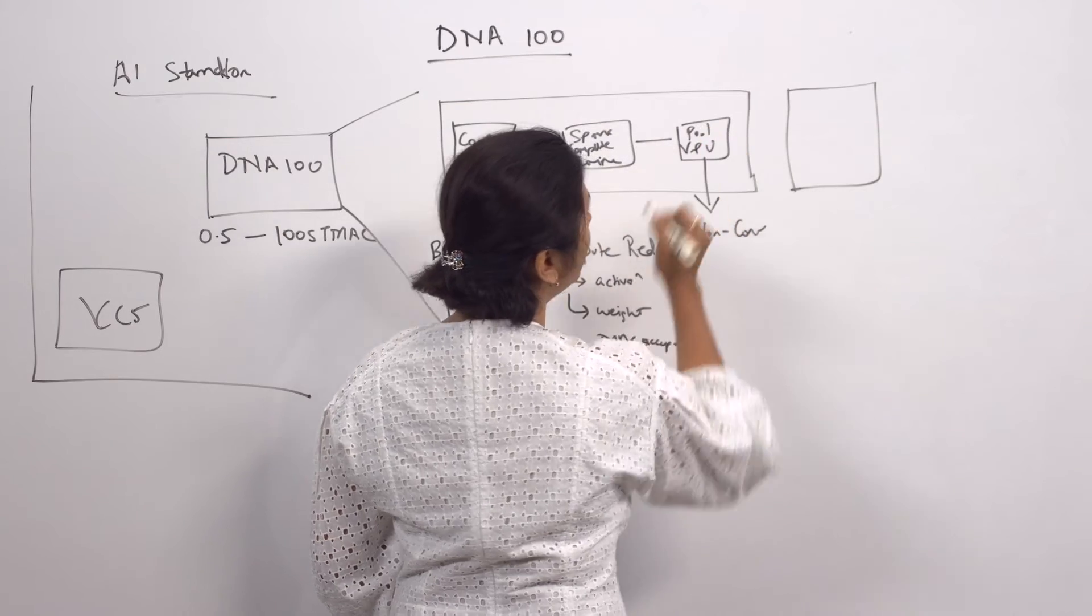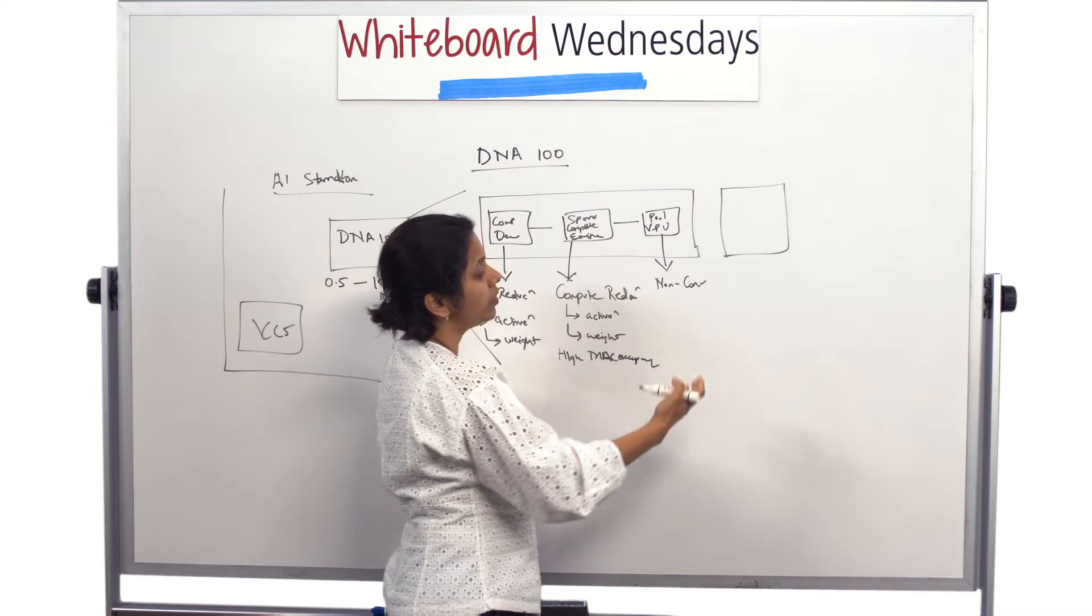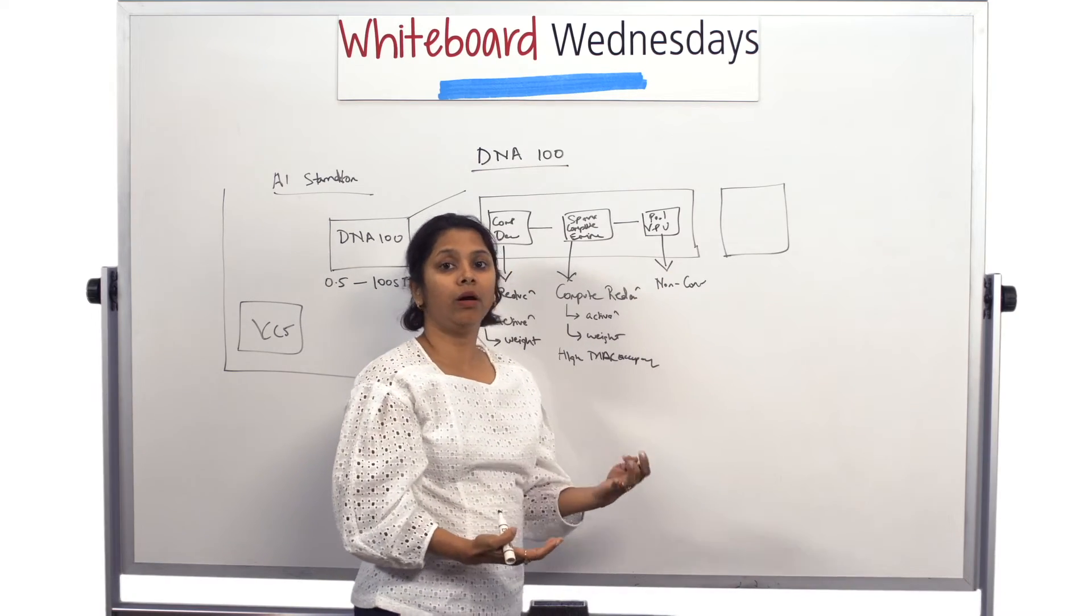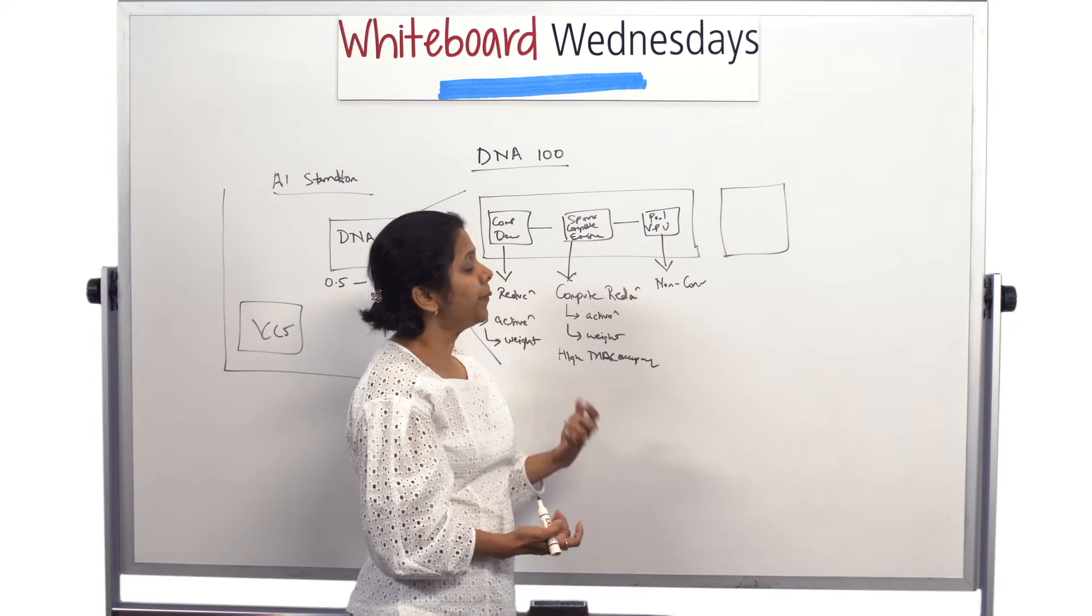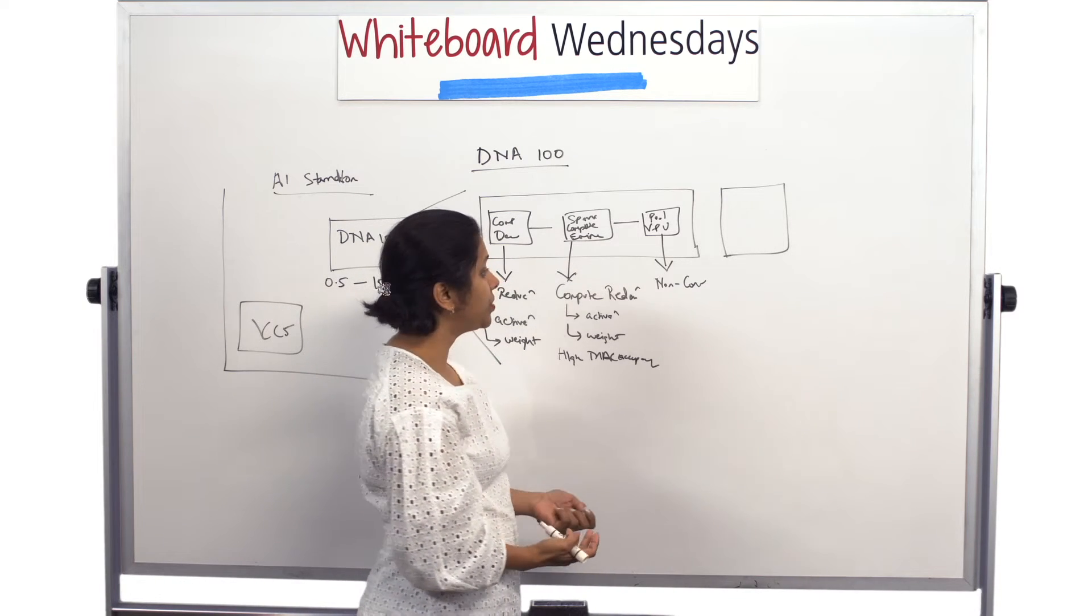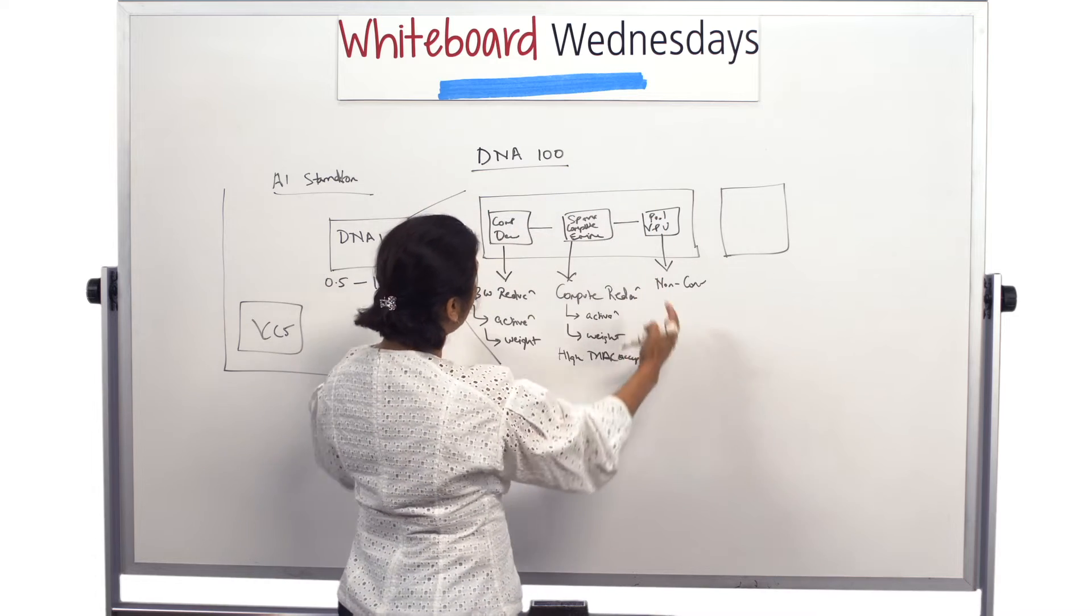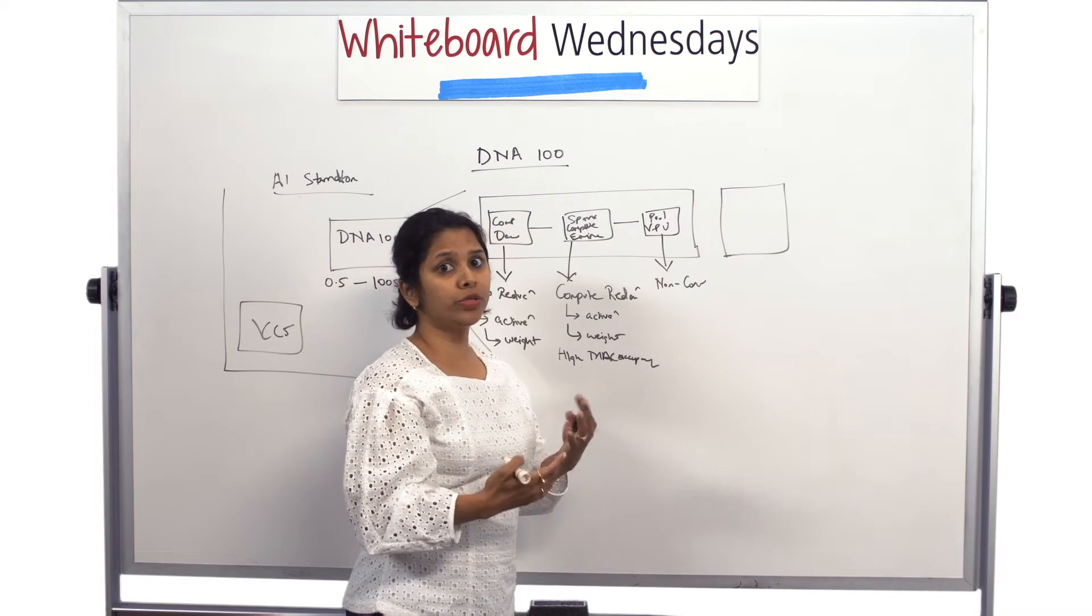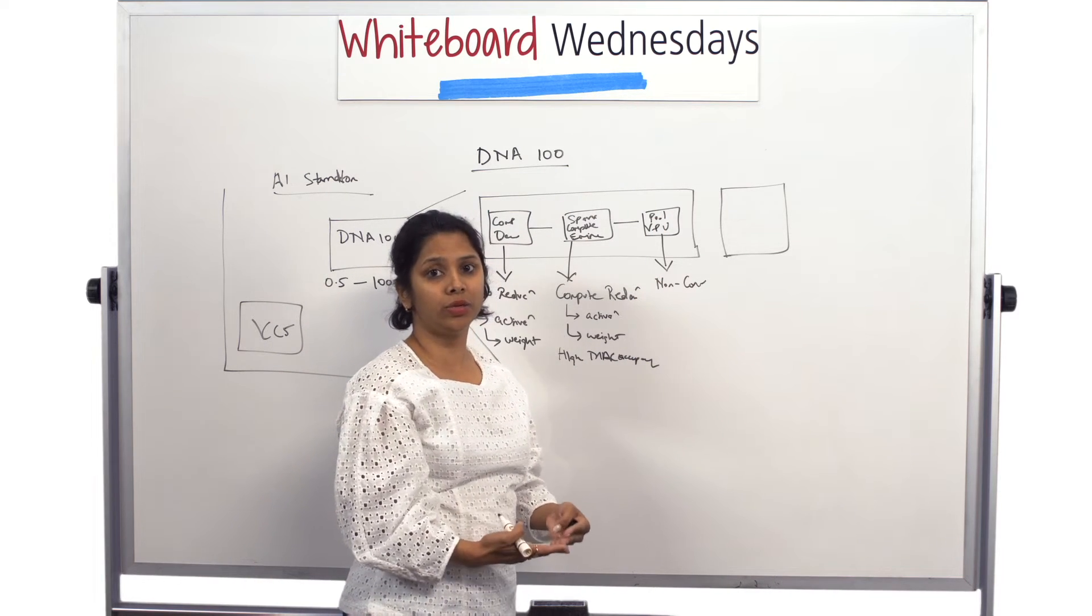This is the hardware block where we take care of all non-convolution layers. Non-convolution layers like the pooling I mentioned, like ReLU, or the vector processing unit which will take care of activation functions like sigmoid, tanh, element-wise operations and so on. So overall this package will take care of most of the layers which are present in a neural network.